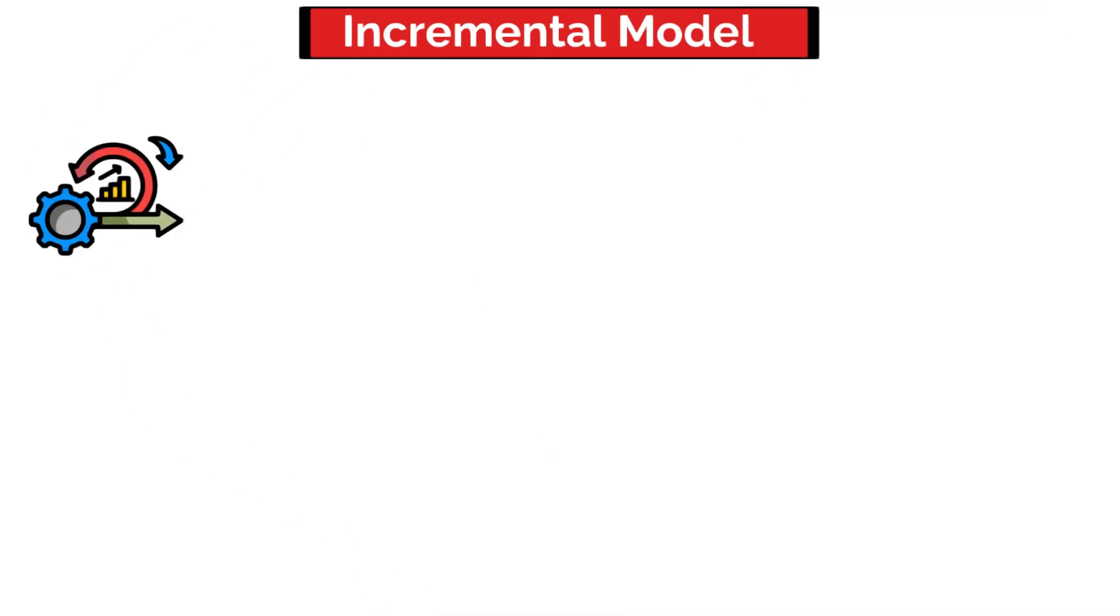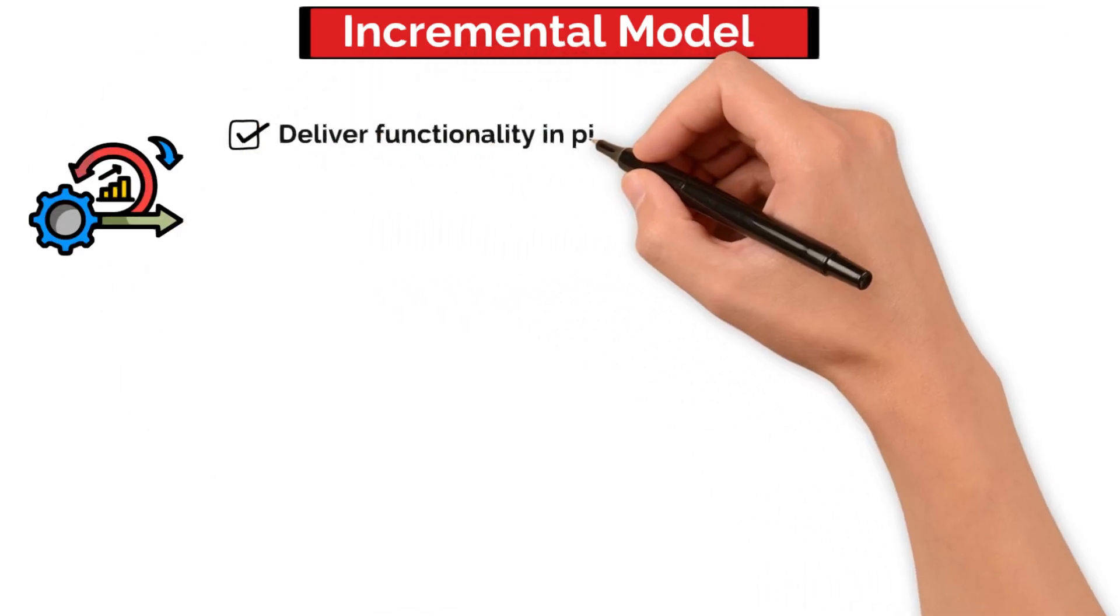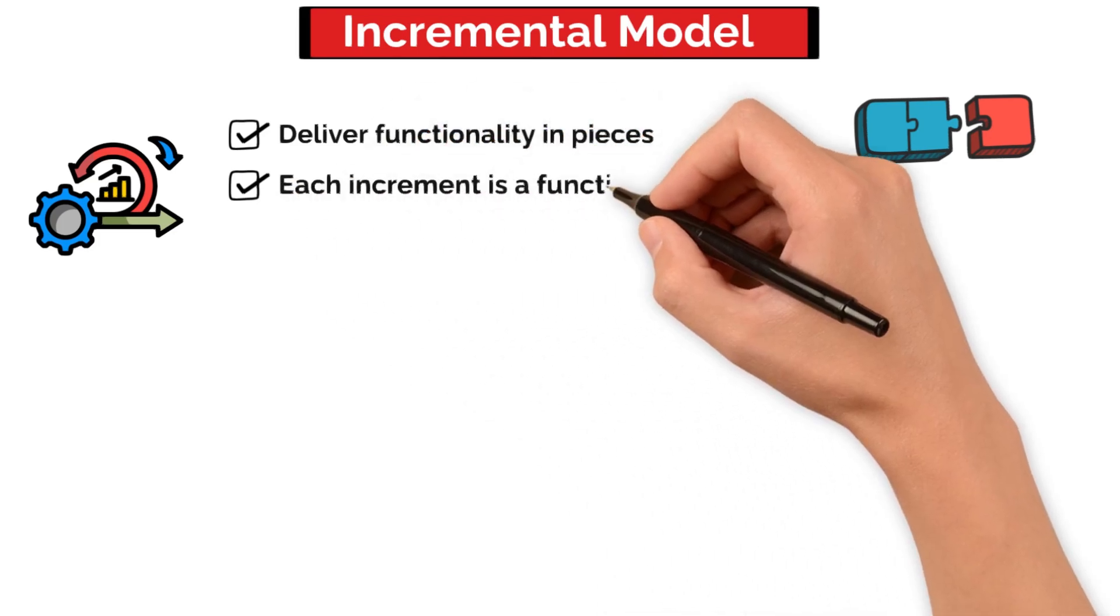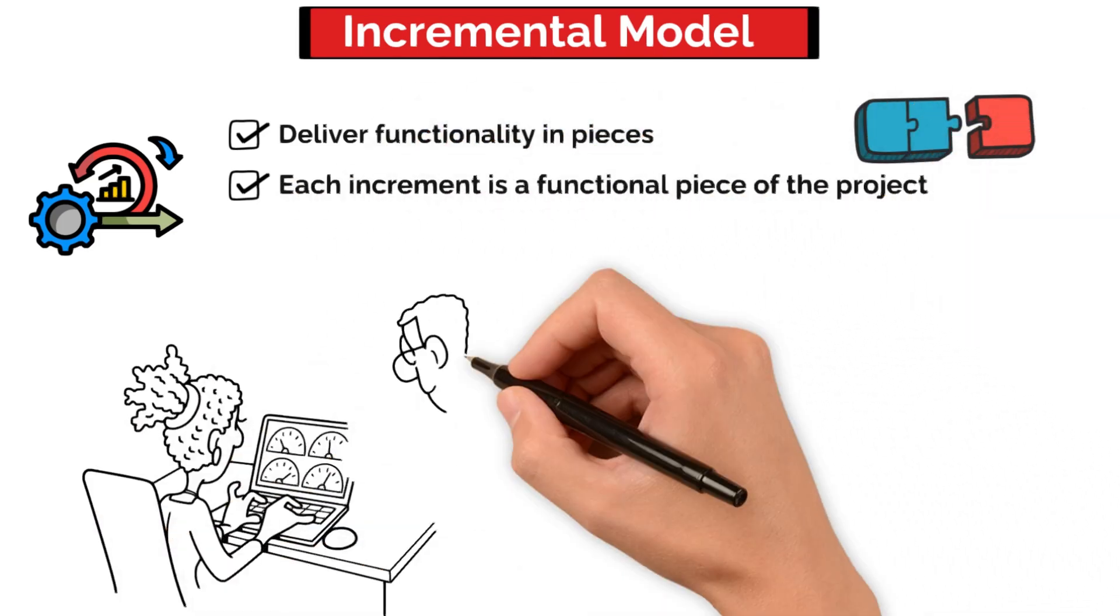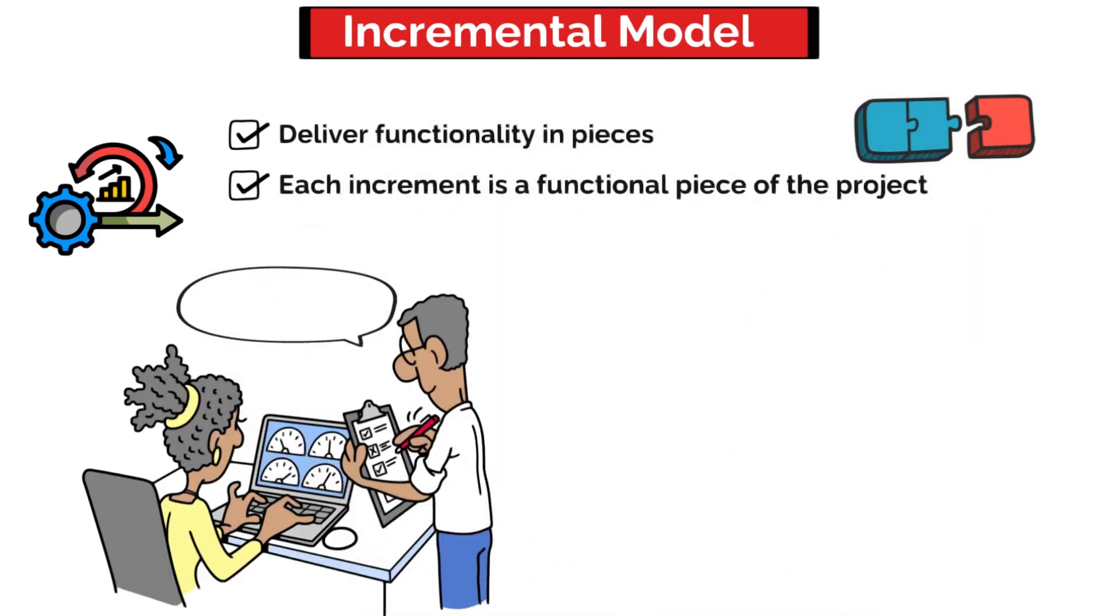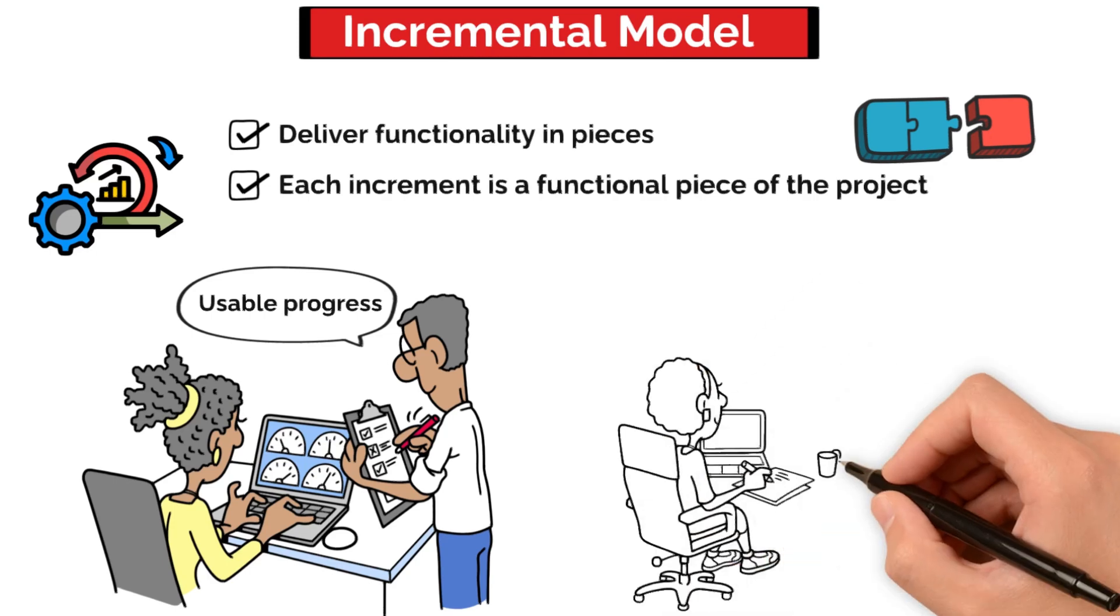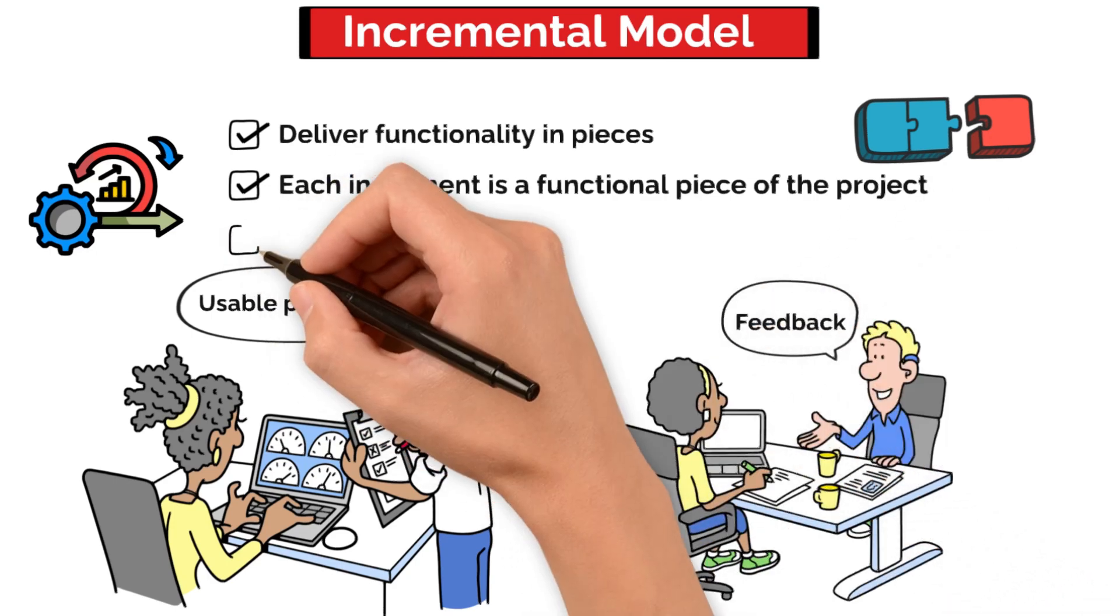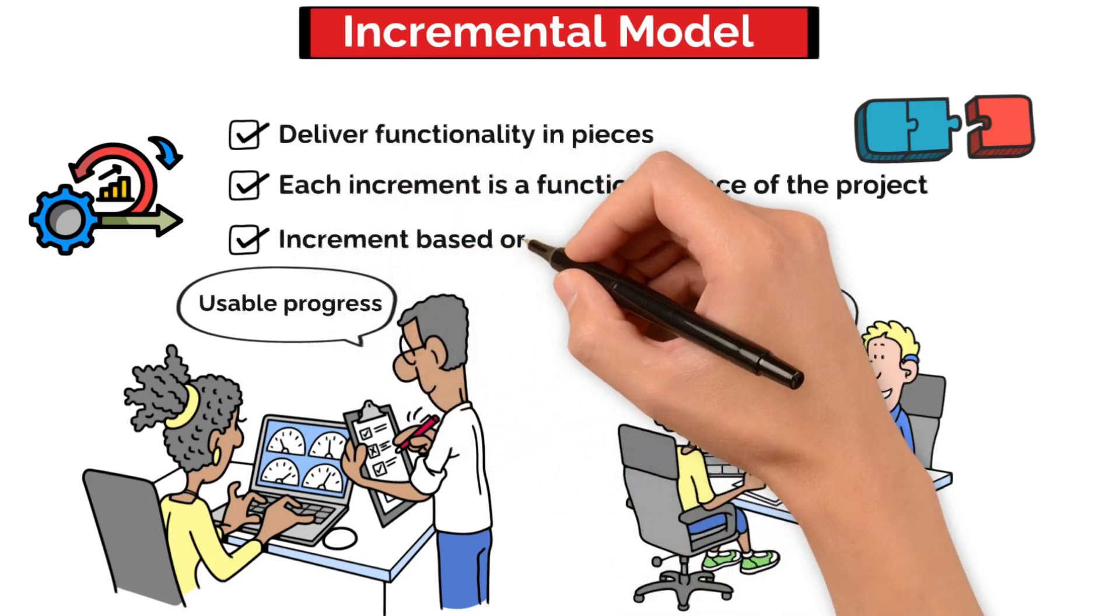What makes the incremental model special? It's all about delivering functionality in pieces, one part at a time. Each increment stands alone as a functional piece of the project, so stakeholders see real, usable progress with every step. And that's a major advantage. Feedback happens as you go, helping shape the next increment based on user input.